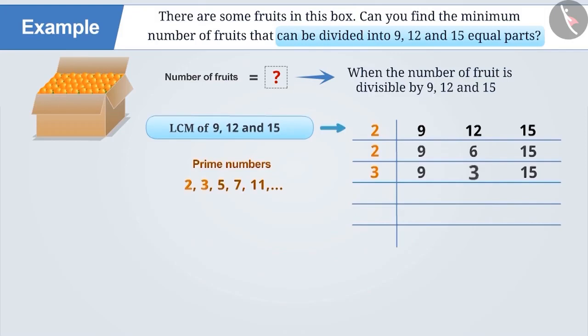Because the numbers 9, 3 and 15 are not divisible by 2, we will continue the process till we get 1, 1, 1 in the same row.